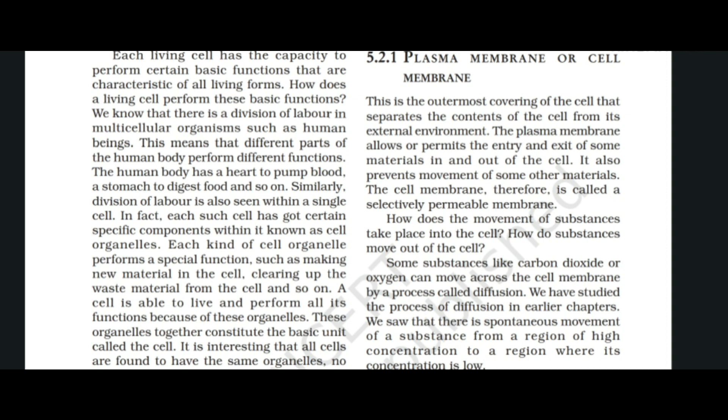Examples include mitochondria, plastids, Golgi apparatus, and others. These are different types of cell components. Each kind of cell organelle performs a special function, such as making new material in the cell and clearing up waste material from the cell.